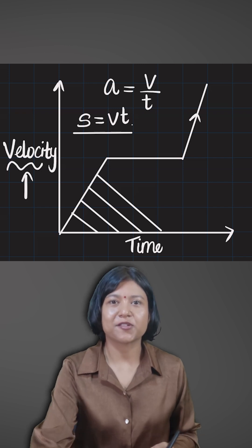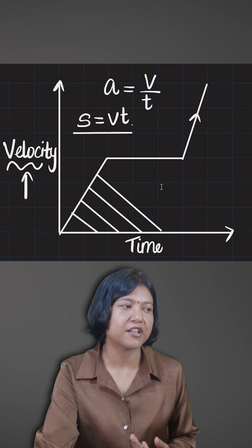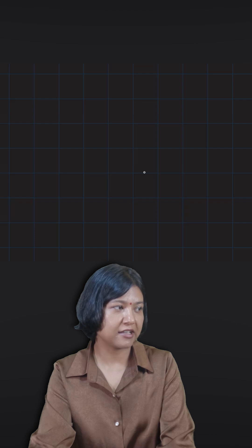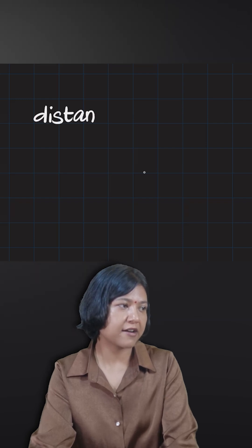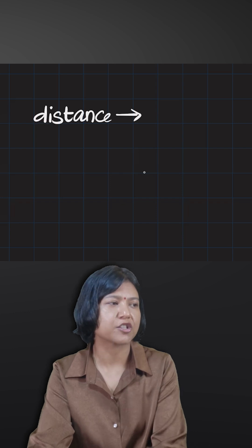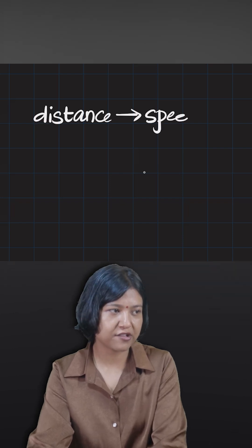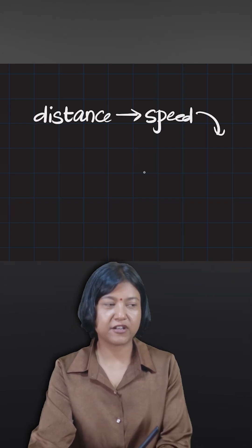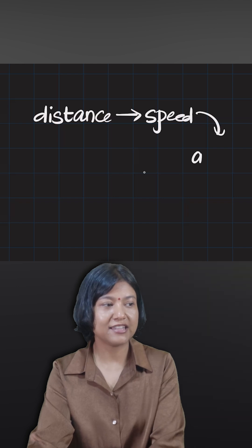So always remember that if differentiation takes you forward, like if you have your distance-time graph, from the distance-time graph you find the gradient or you differentiate the distance function to get the speed function or the velocity function. And then when you differentiate the speed function, that is when you get the acceleration.